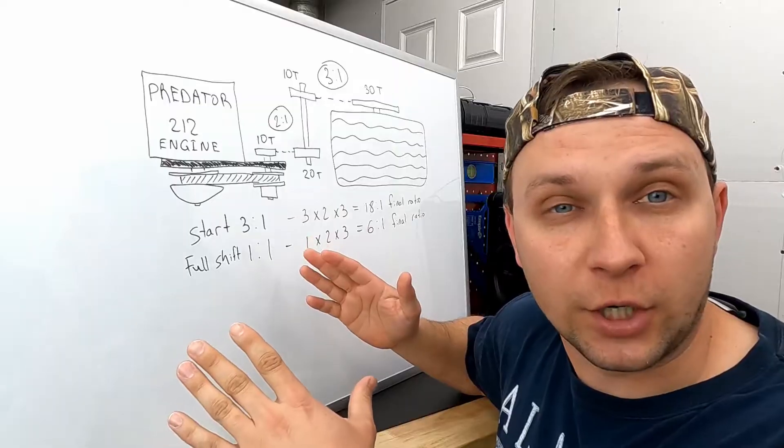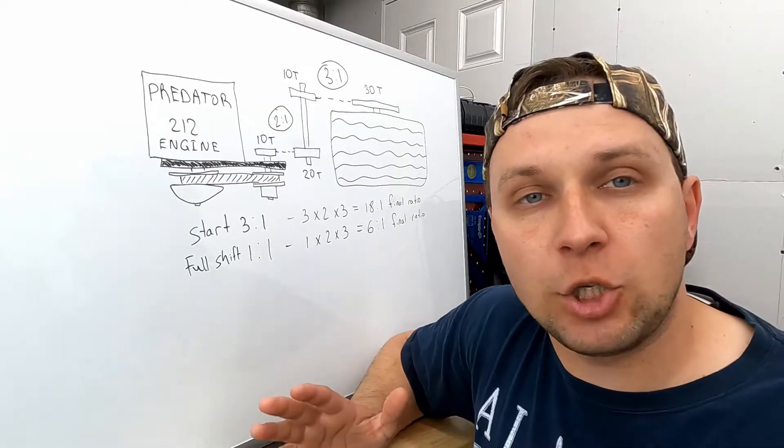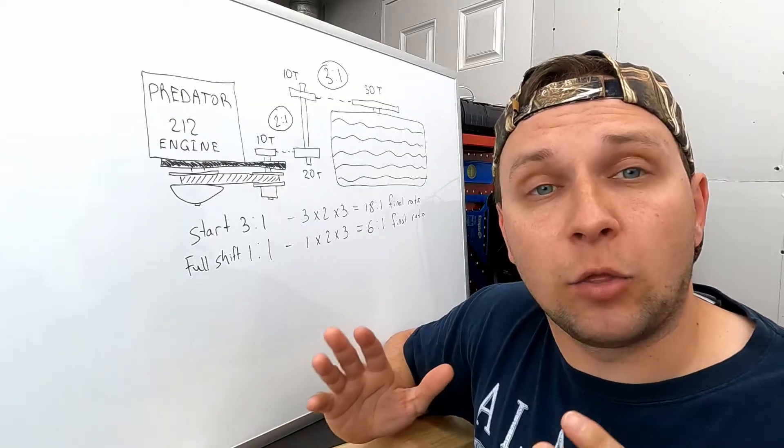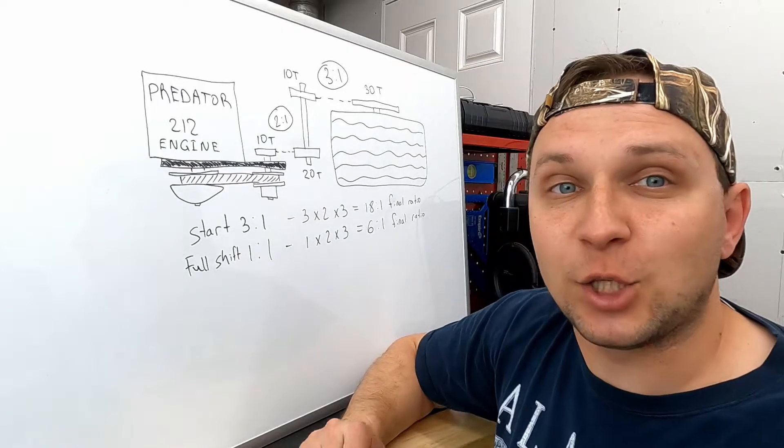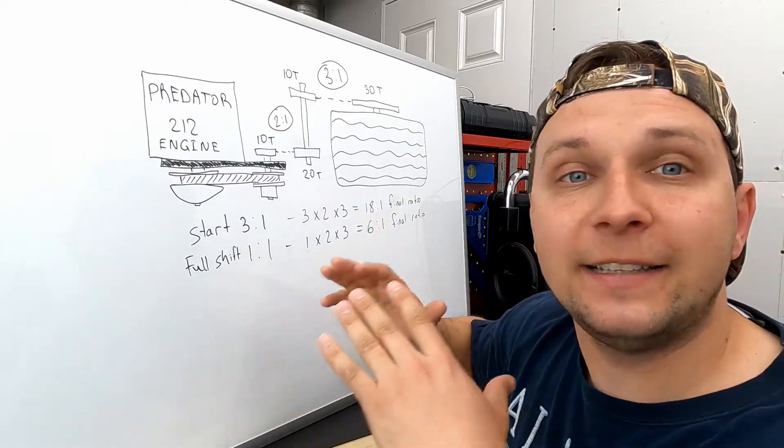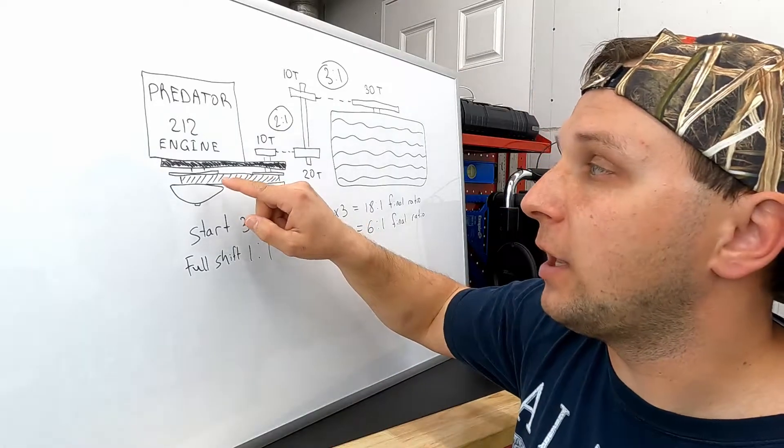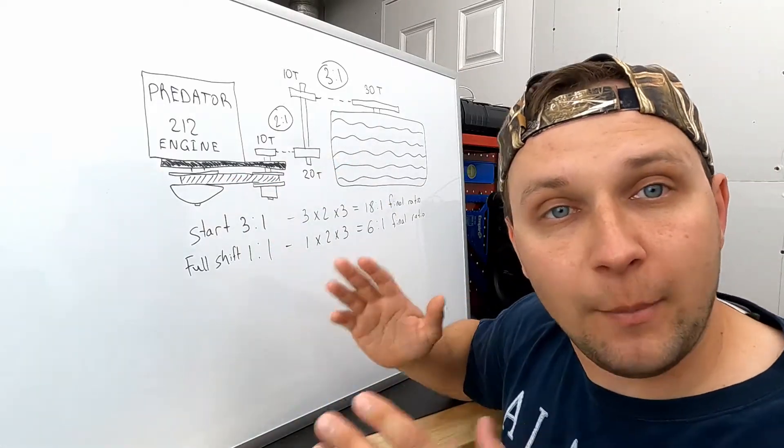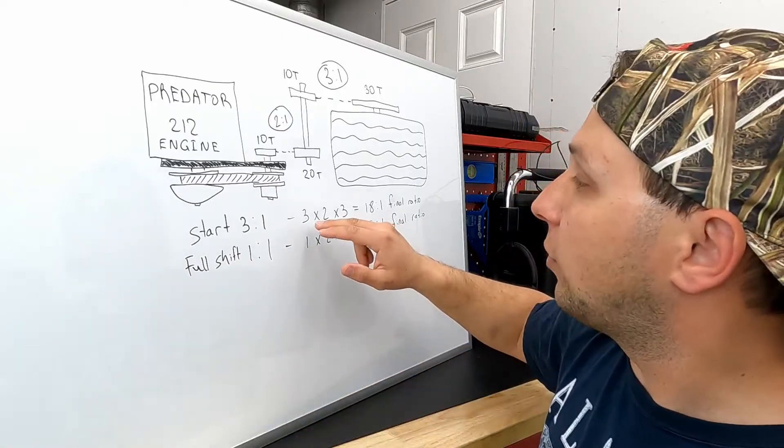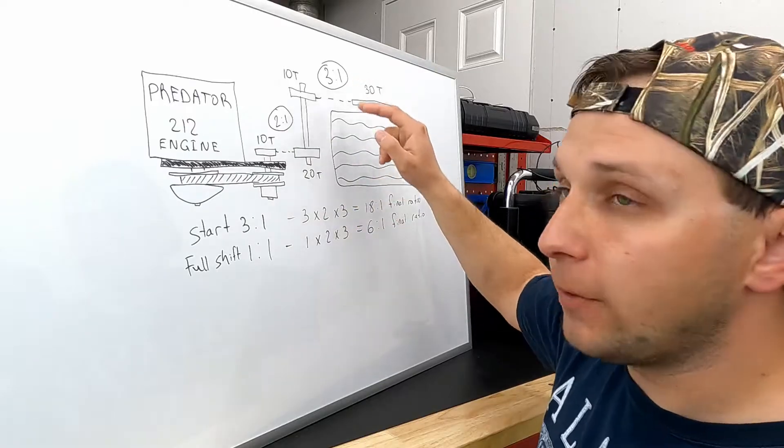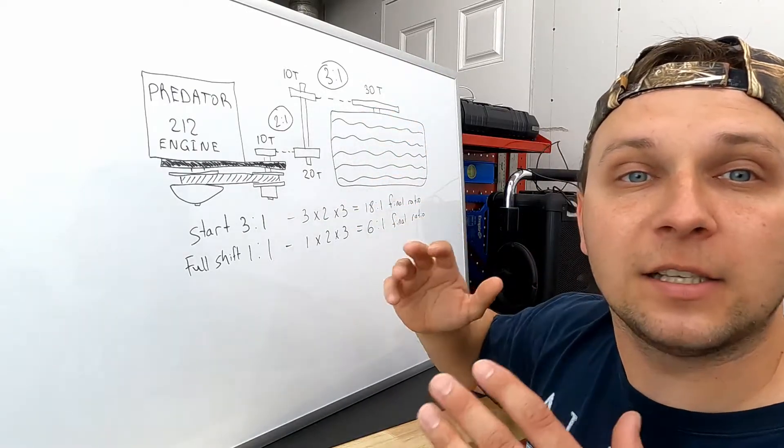Here we have a setup with a torque converter. Most of the 30 series torque converters range in ratio from approximately 3 to 1 initially through about 1 to 1 when fully shifted. So now let's count the gear ratio at the takeoff. That's when the RPMs go up and the belt starts to engage. At that moment the gear ratio is approximately 3 to 1, so 3 times 2 times 3 equals 18 to 1 final ratio at the start, at the takeoff.